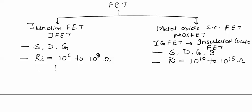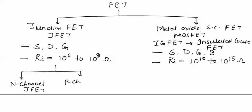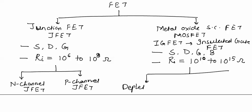Junction field effect transistors are divided into two types: N-channel JFET and P-channel JFET. While MOSFETs are divided into two types: one is Depletion MOSFET and the other is Enhancement MOSFET.